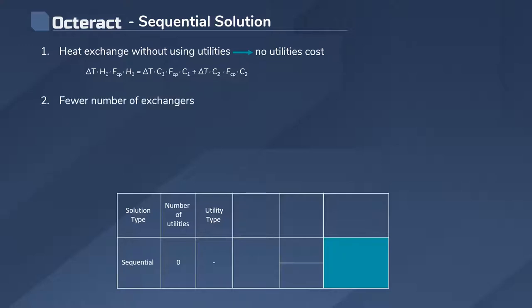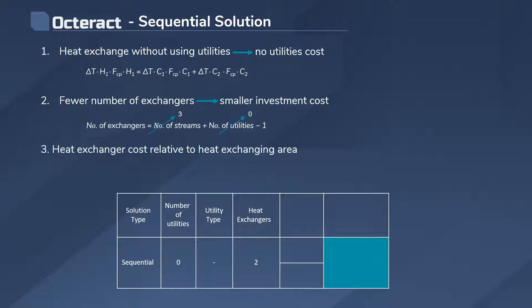Since no utilities will be used, the number of heat exchangers needed will be two. One for the heat exchange between one cold stream and the hot one and one between the other cold stream and the hot one.